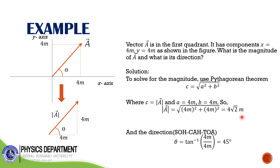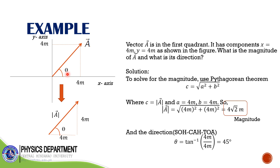For the direction, it can be solved using SOH-CAH-TOA. I will use TOA: tangent equals opposite over adjacent. So tangent of theta equals the opposite over the adjacent, which equals 4 meters over 4 meters. Solving for theta: theta equals the inverse tangent of (4 over 4), which equals the inverse tangent of 1, which equals 45 degrees. So the magnitude is 4 square root of 2 meters and the direction theta is equal to 45 degrees.